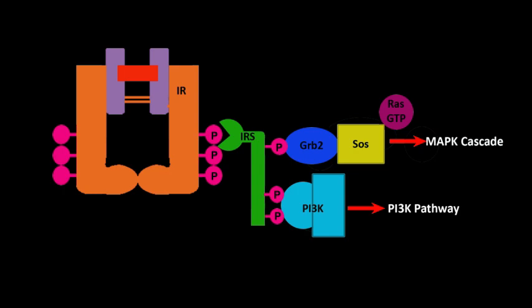Next is a MAP kinase cascade, in which each kinase activates the next. We can watch the animation of IRS activation and the signaling pathways.